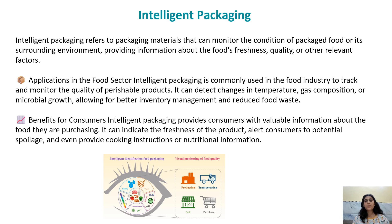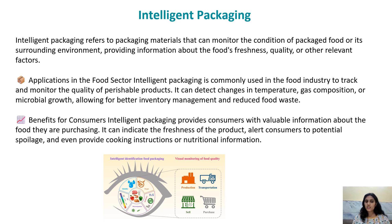Intelligent packaging systems are of three types: indicators, RFIDs (radio frequency identification tags), and sensors. In the food sector, intelligent packaging is commonly used to track and monitor quality of perishable products. It can detect changes in temperature via time-temperature indicators, gas composition, or microbial growth, allowing better inventory management and reduced food waste. It also provides consumers with valuable information such as freshness, potential spoilage alerts, cooking instructions, or nutritional information.